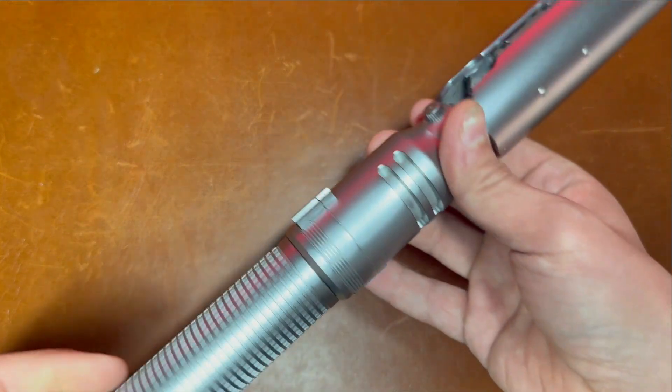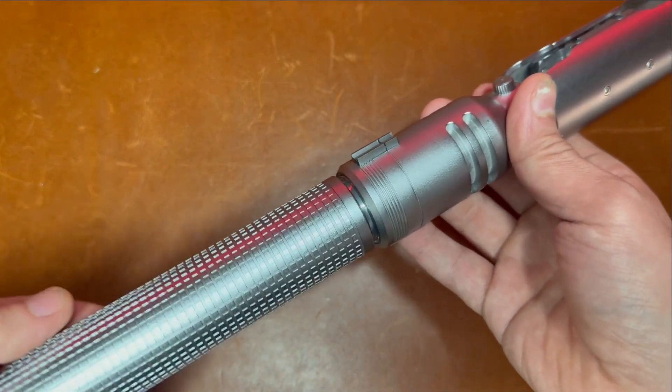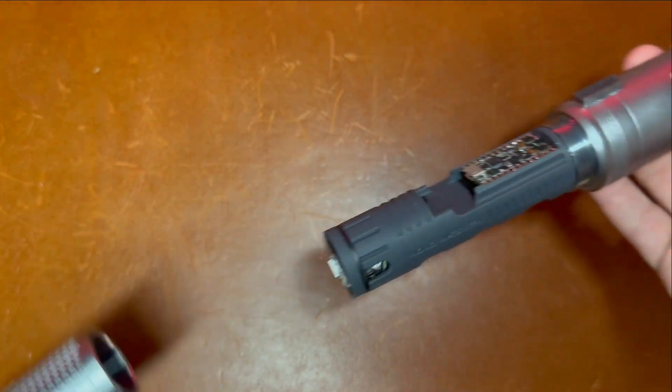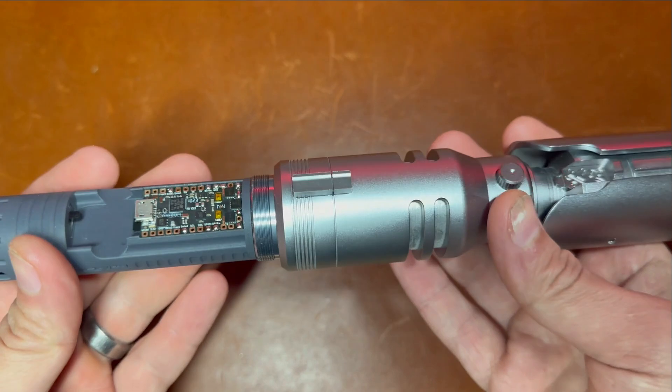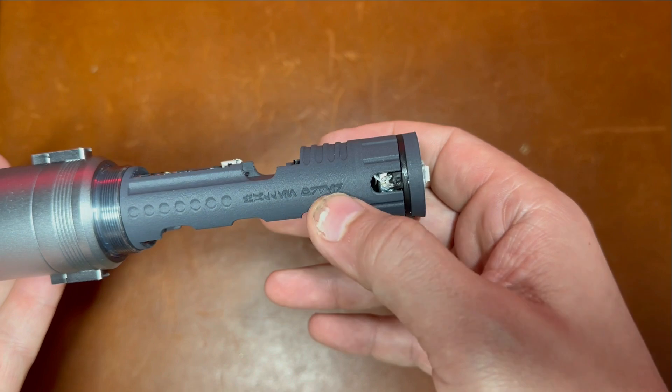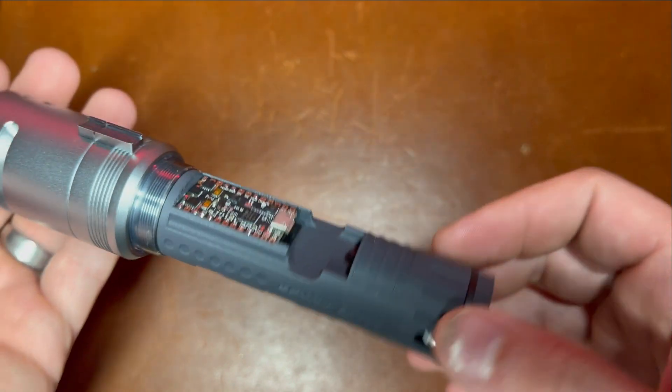To get to your chassis, you just want to unscrew the handle here. So slide right off. And this is what it looks like here. So it says Solo Sabres over here for me and Fallen Order over here in Aurebesh.